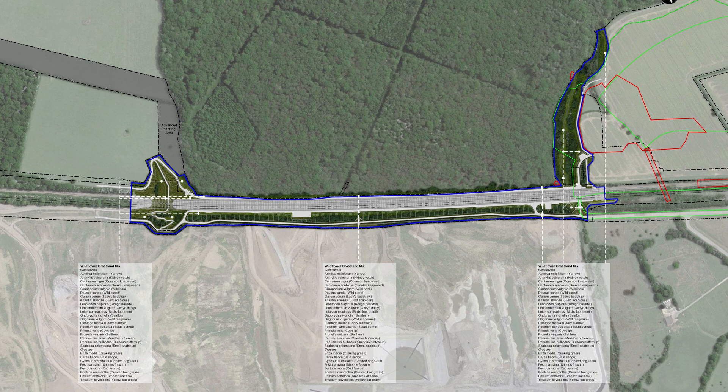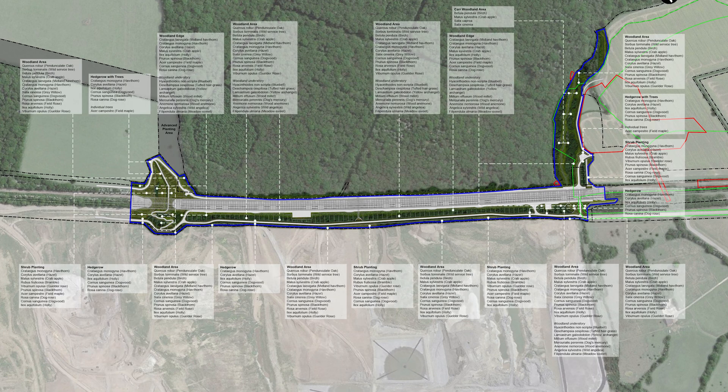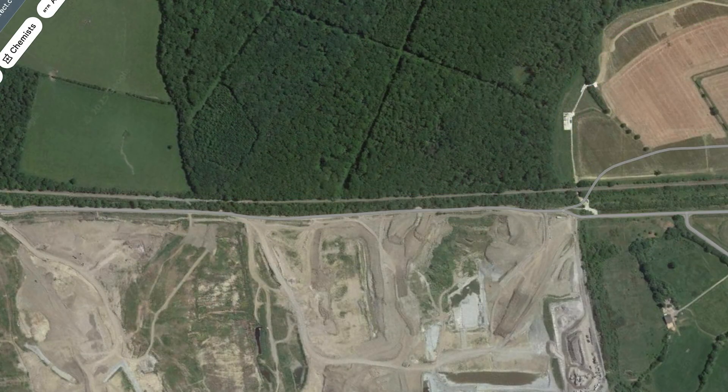We now reach Sheep House Wood and the Bat Mitigation Structure. This shows the plans for the wildflower grassland mixes. And now the woodland mixes and hedgerows.